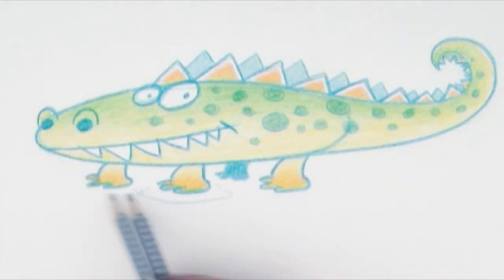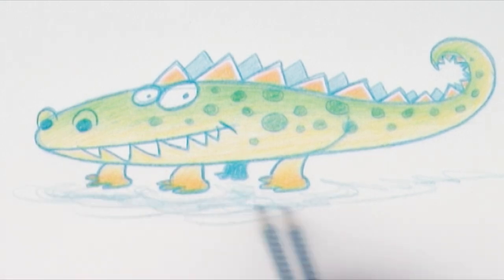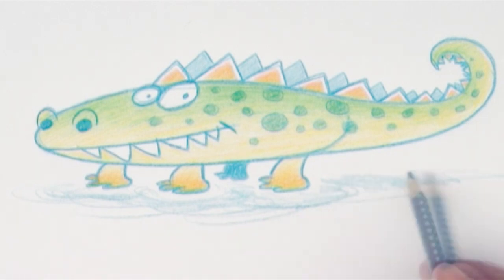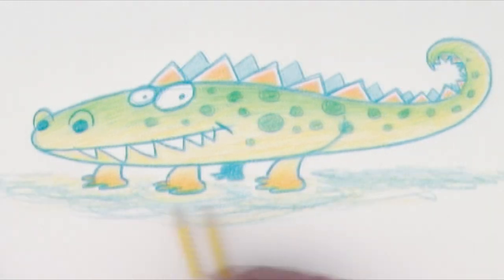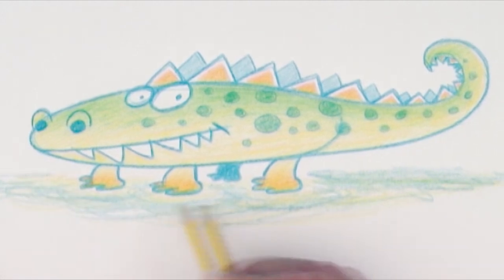On the ground, the crocodile casts some shadow. And that I'll color blue. I make the shadow a little uneven. So it looks like Kiss Me is standing on a wet place. For example by the riverside. Crocodiles just love water.